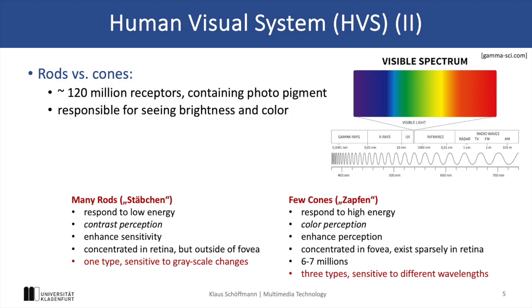In contrast, there are about 6 to 7 million cones, which are responsible for color perception. These cones respond to high energy light and are most densely packed in the fovea. Cones enhance our ability to see details and color, with three types responding to different wavelengths of light, namely red, green, and blue.